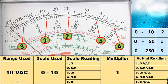For number 1, we have 3 — because this is 2, 2.2, 2.4, 2.6, 2.8, and 3. So for number 1, the reading is 3. Then for number 2, this is 4, 4.2, 4.4, 4.6, 4.8, and 5, 5.2. So number 2 is 5.2.